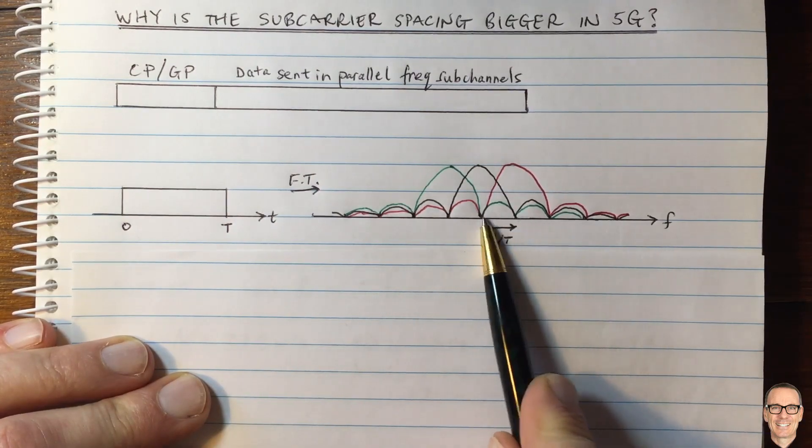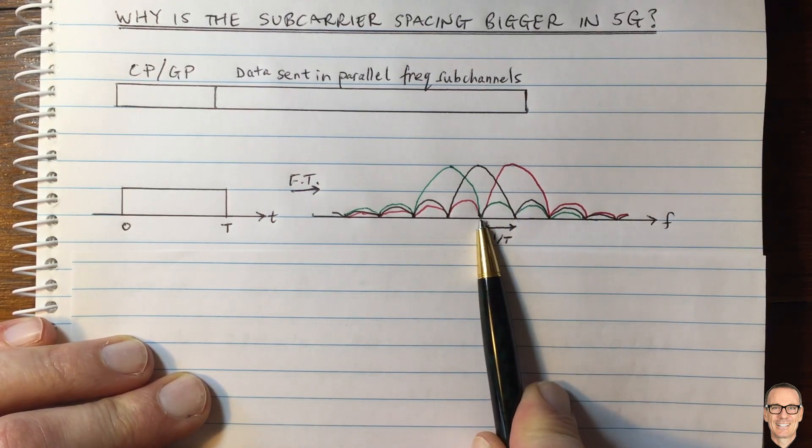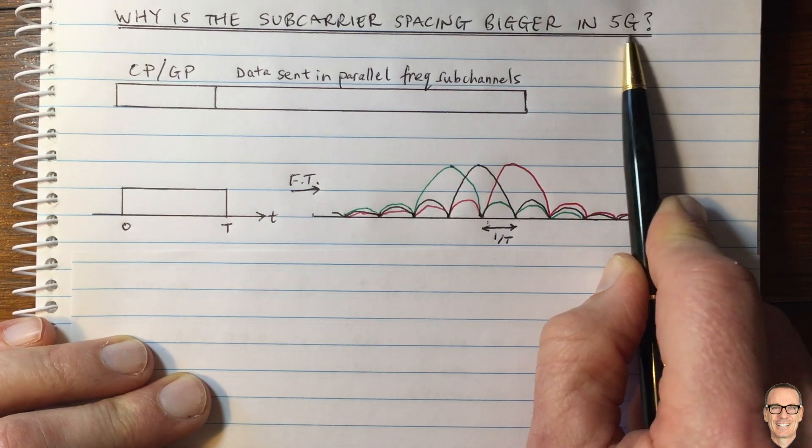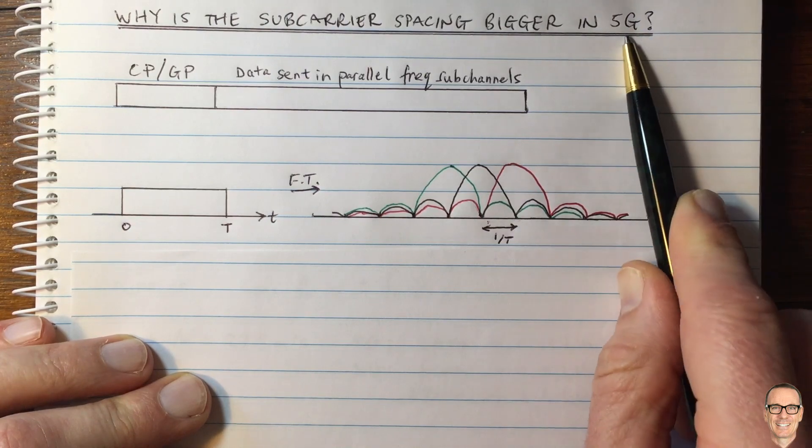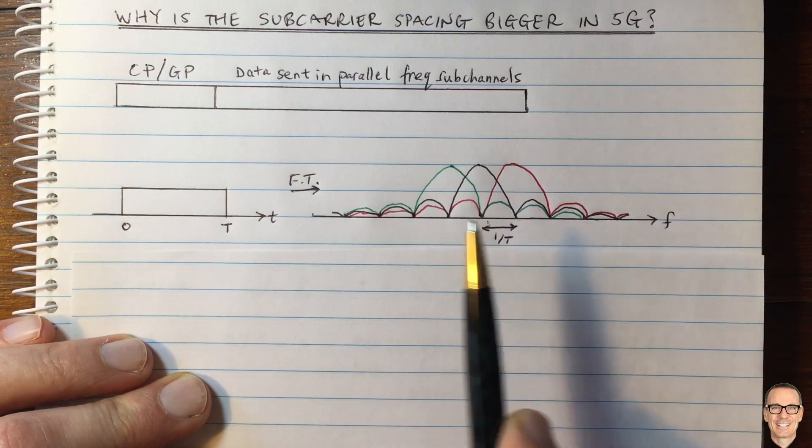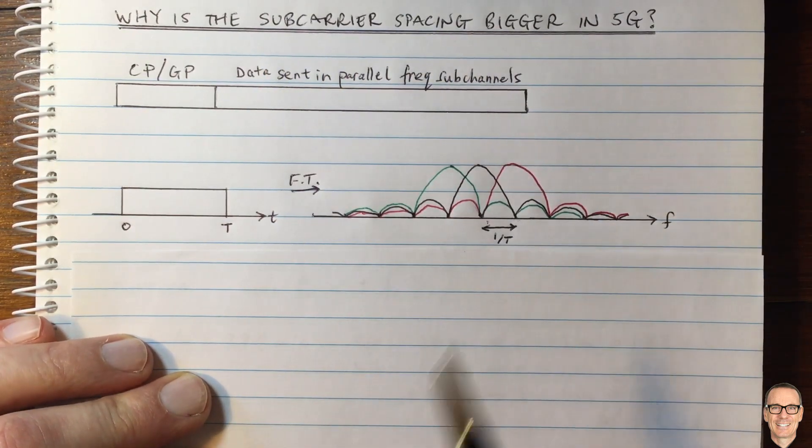So let's now think about what affects that amount of time. So one thing that affects it is Doppler. And in 5G, we're using higher frequency bands, including millimeter wave communications, and the Doppler is worse. So that is the reason for the sub-carrier spacings being bigger. Let's try to understand that.